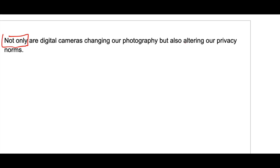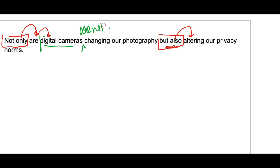Next: 'Not only are digital cameras changing our photography but also altering our privacy norms.' Here 'not only...but also' is the connector. After 'but also' you have an ing verb 'altering', but after 'not only' you have a be-verb and a noun — that's not parallel. The position of 'not only' must change: 'Digital cameras are not only changing our photography but also altering our privacy norms.' Now both parts after 'not only' and 'but also' have ing verbs.